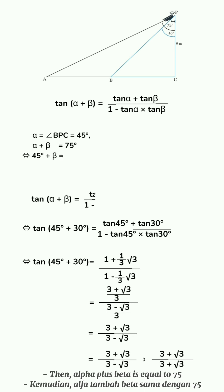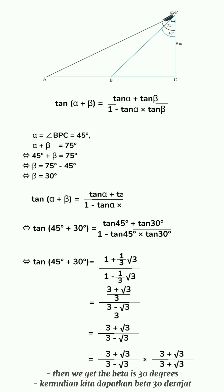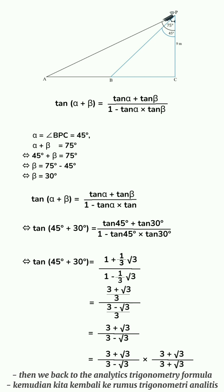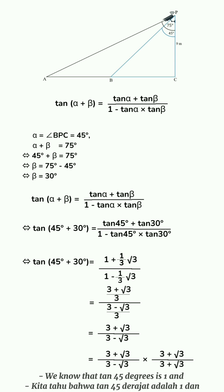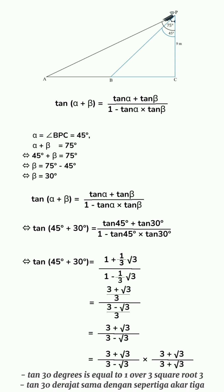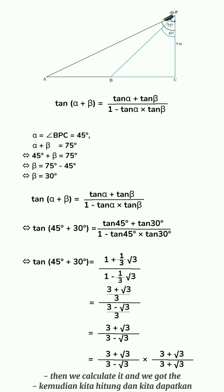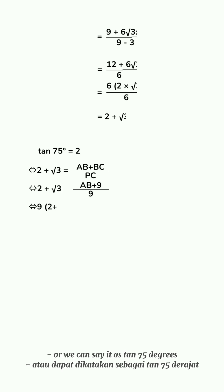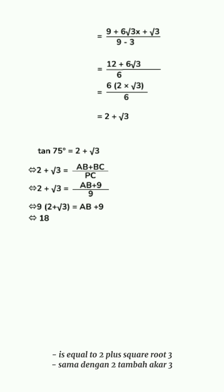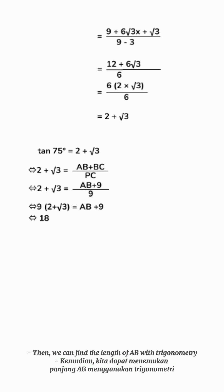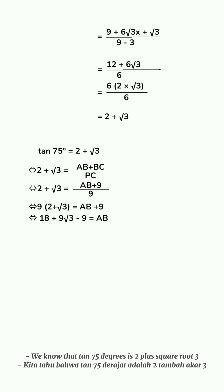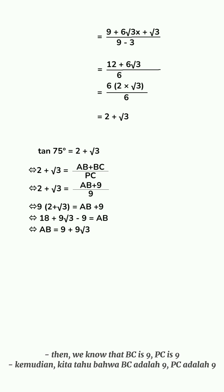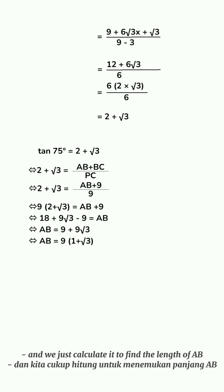The formula is: tan(α + β) = (tan α + tan β) / (1 − tan α · tan β). With α = 45° and α + β = 75°, we calculate β = 30°. Substituting: tan(45° + 30°) = (tan 45° + tan 30°) / (1 − tan 45° · tan 30°). Since tan 45° = 1 and tan 30° = 1/√3, we calculate and get tan 75° = 2 + √3. Then, tan 75° = AC/PC, where AC = AB + BC and PC = 9.